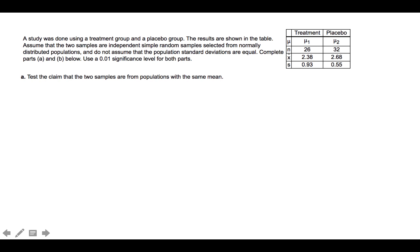A study was done using a treatment group and a placebo group. The results are shown in the table. Assume that the two samples are independent simple random samples selected from normally distributed populations and do not assume that the population standard deviations are equal. Complete parts A and B below using a 0.01 significance level for both parts. Part A is to test the claim that the two samples are from populations with the same mean.